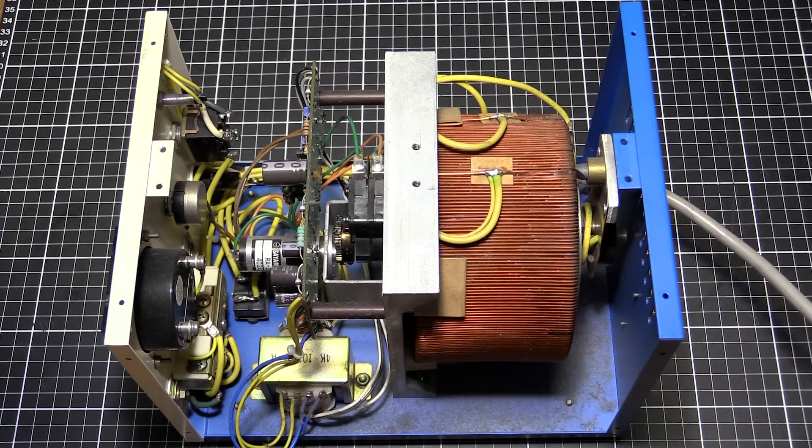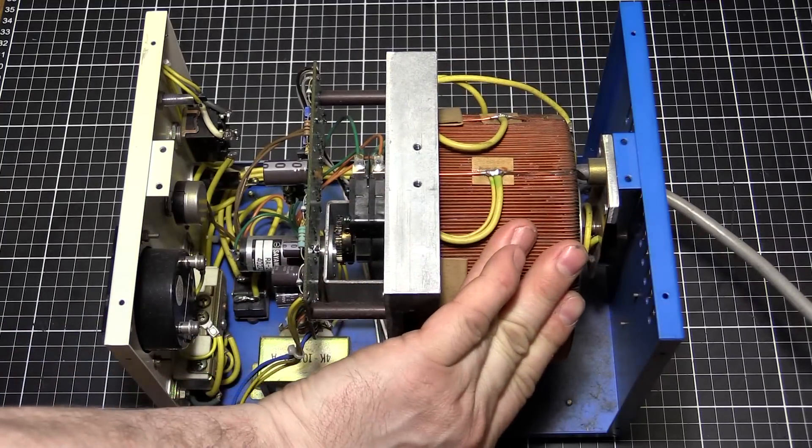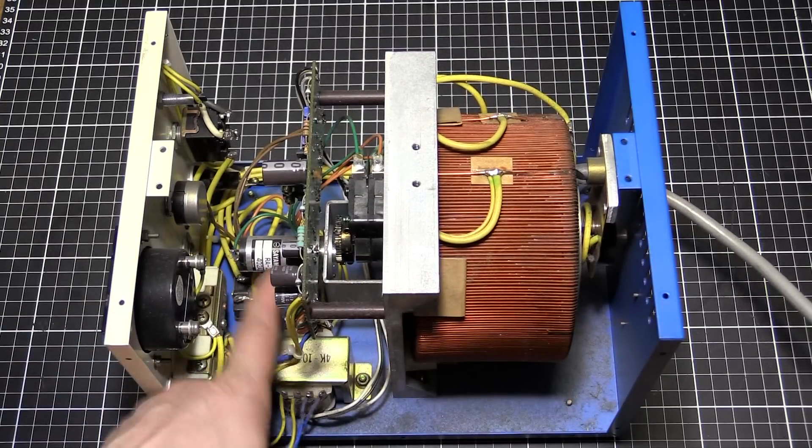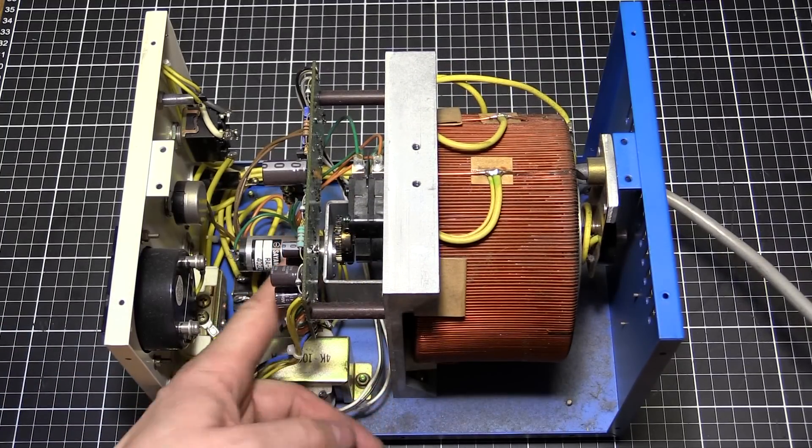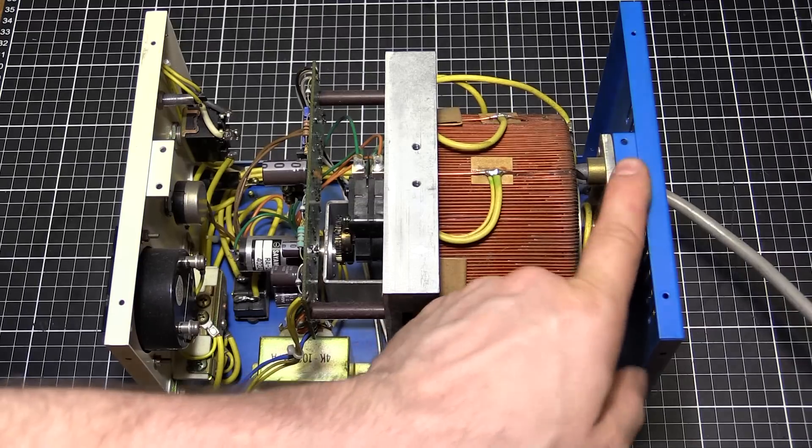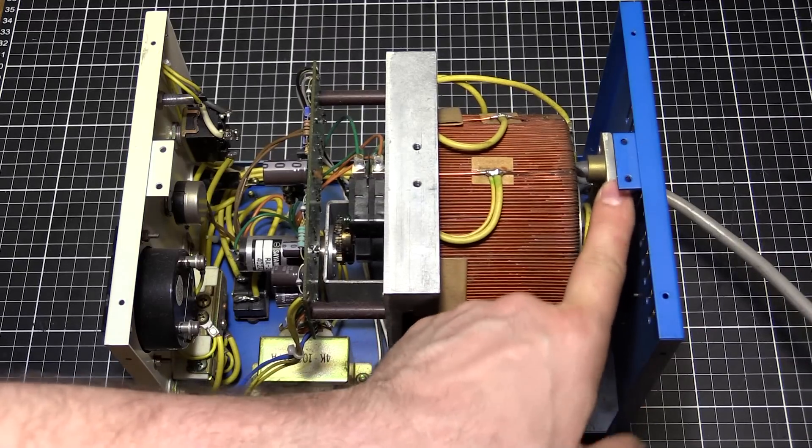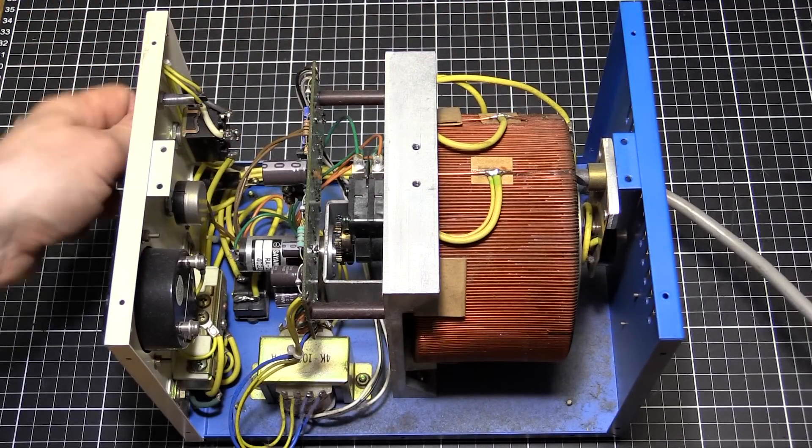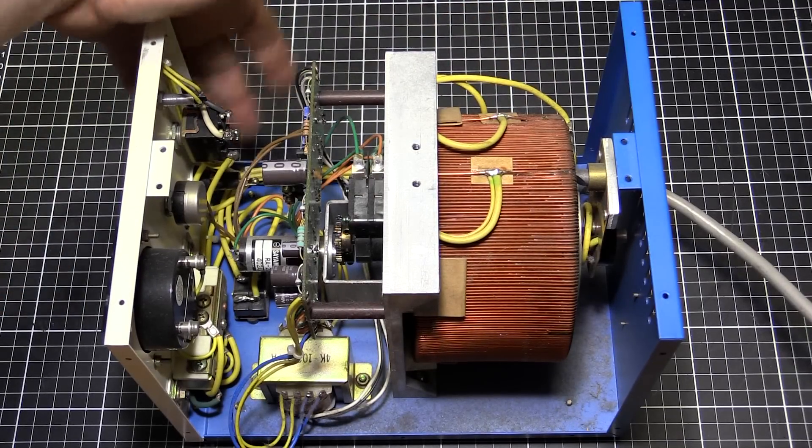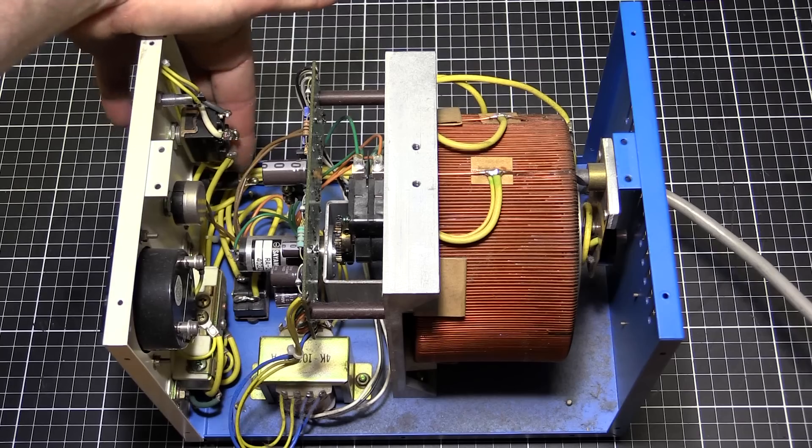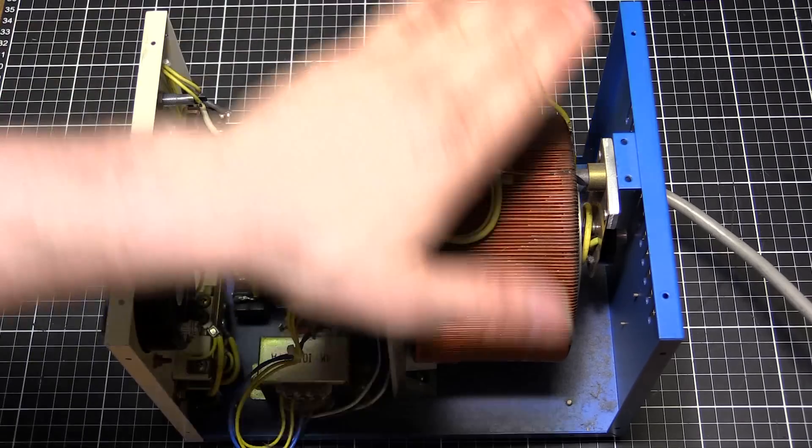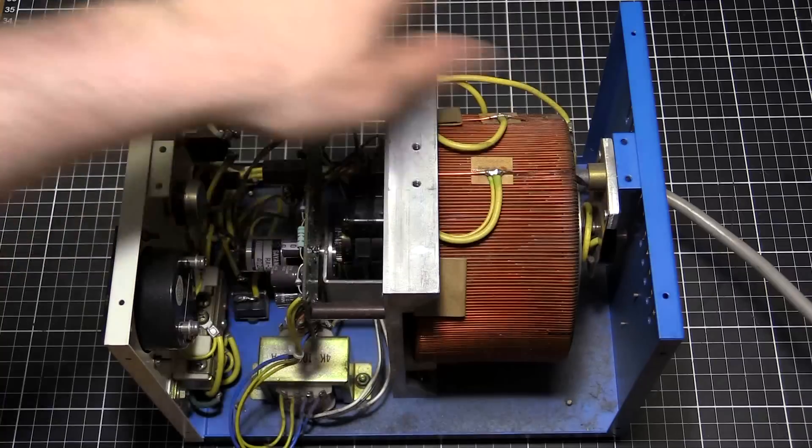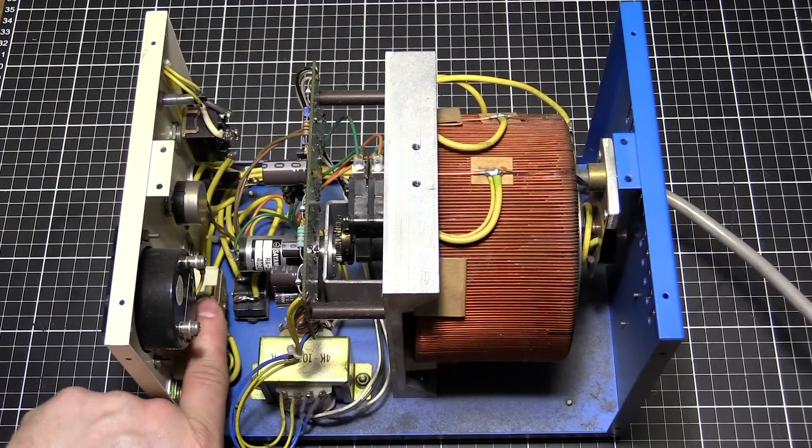And here we are inside the unit. Big auto transformer at the back, geared motor down here at the front, just a DC geared motor, that runs through on a shaft to the brush at the back here. Basically what happens is the power comes in, comes up to the power switch on the front and a fuse, just like with any electrical appliance, then it comes back out to the auto transformer, then from here it comes out to the front panel sockets.